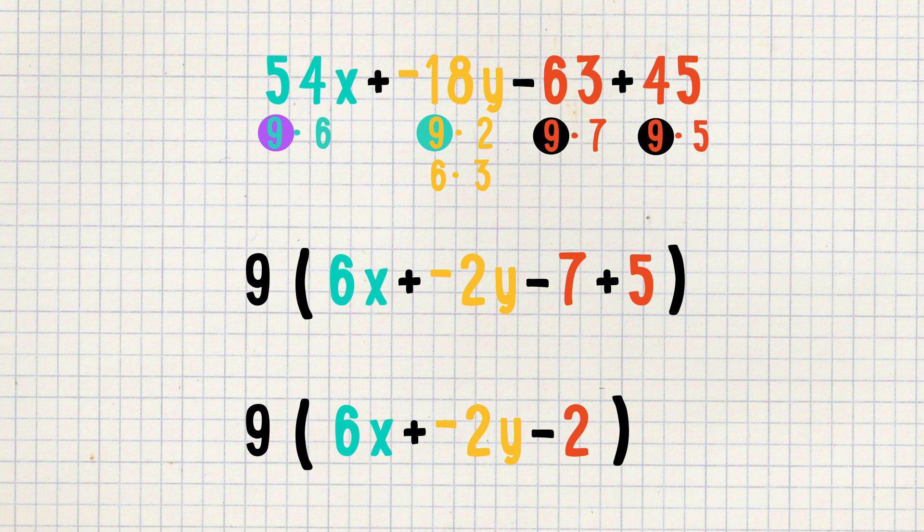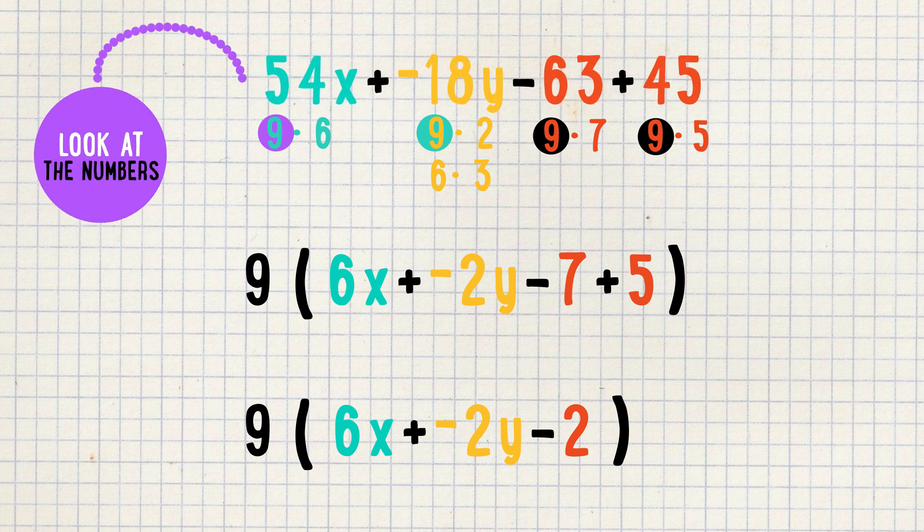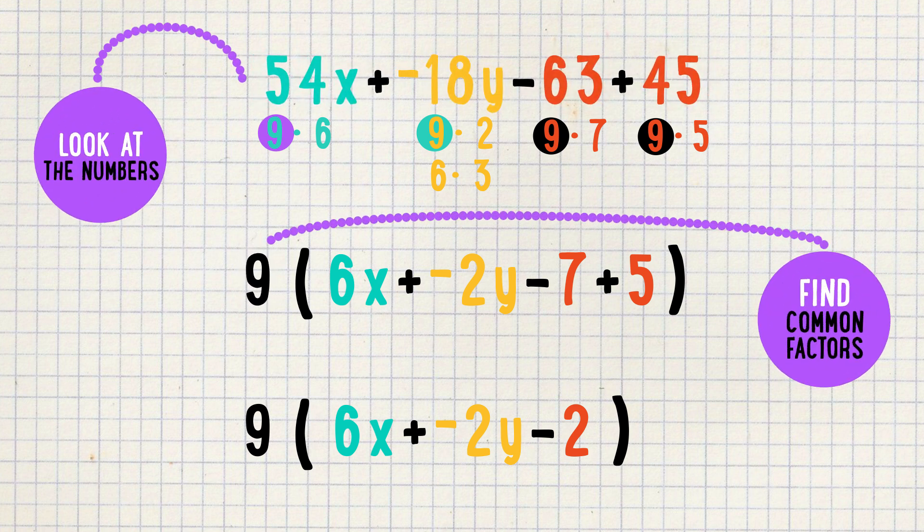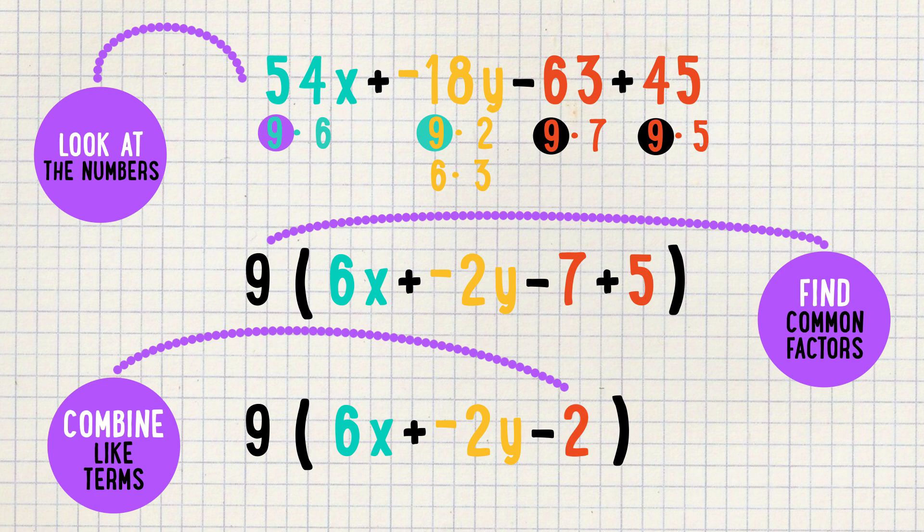To sum it up, using the distributive property in reverse is just like working with these rubber bands. Look at your jumble of numbers and variables, factor out the number of bracelets you want, and last, combine like terms and colors.